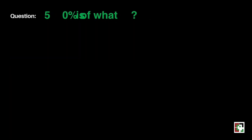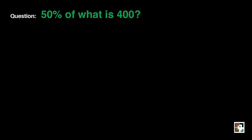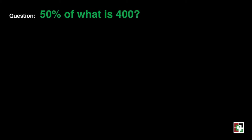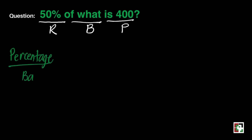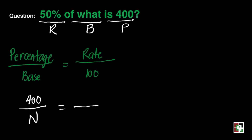We have the next question: 50% of what is 400? Let's identify our base, rate, and percentage. 50% is our rate because it has the percent sign. The unknown is our base because it is near the word 'of,' and 400 is our percentage. We'll use the same formula: percentage over base equals rate over 100.